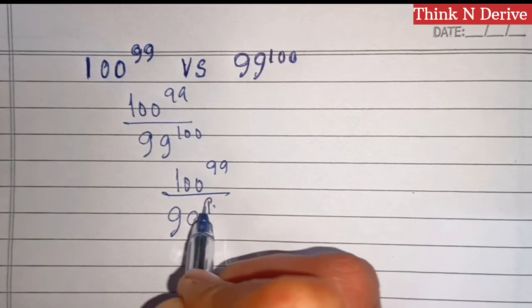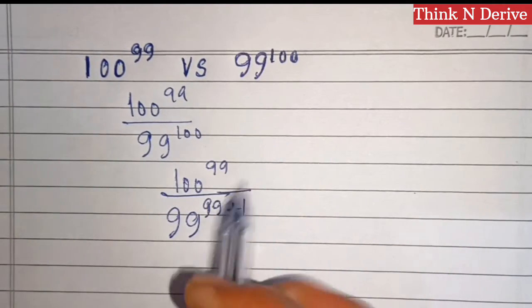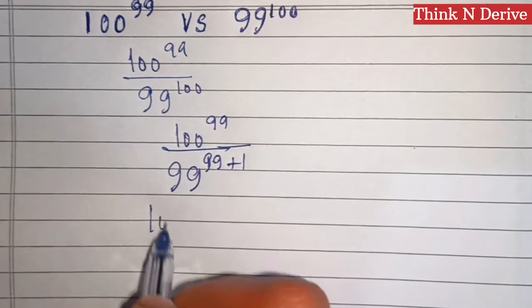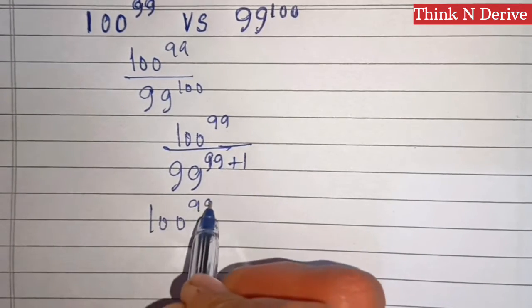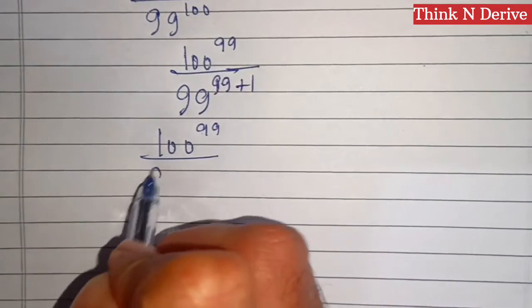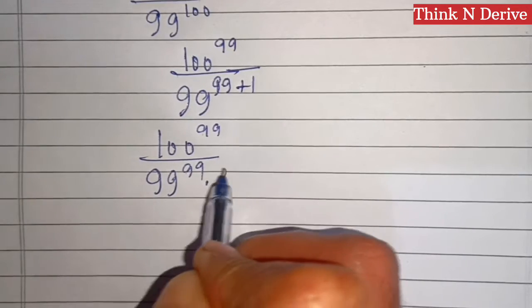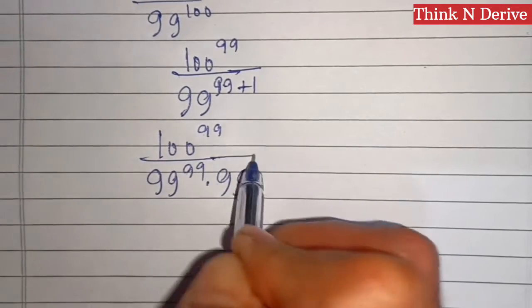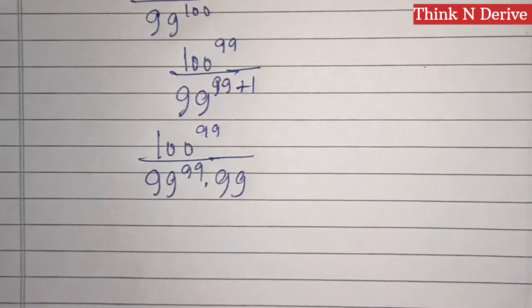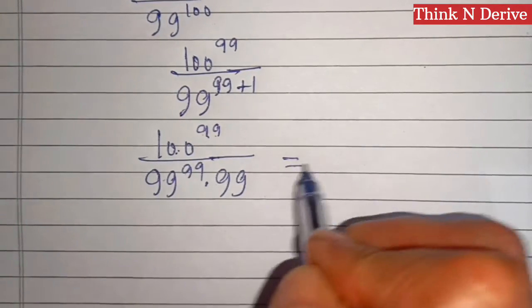This becomes 100^99 over 99^99 times 99^1, which is 99. Now the exponents are the same, so we can write this as (100/99)^99 times 1/99.